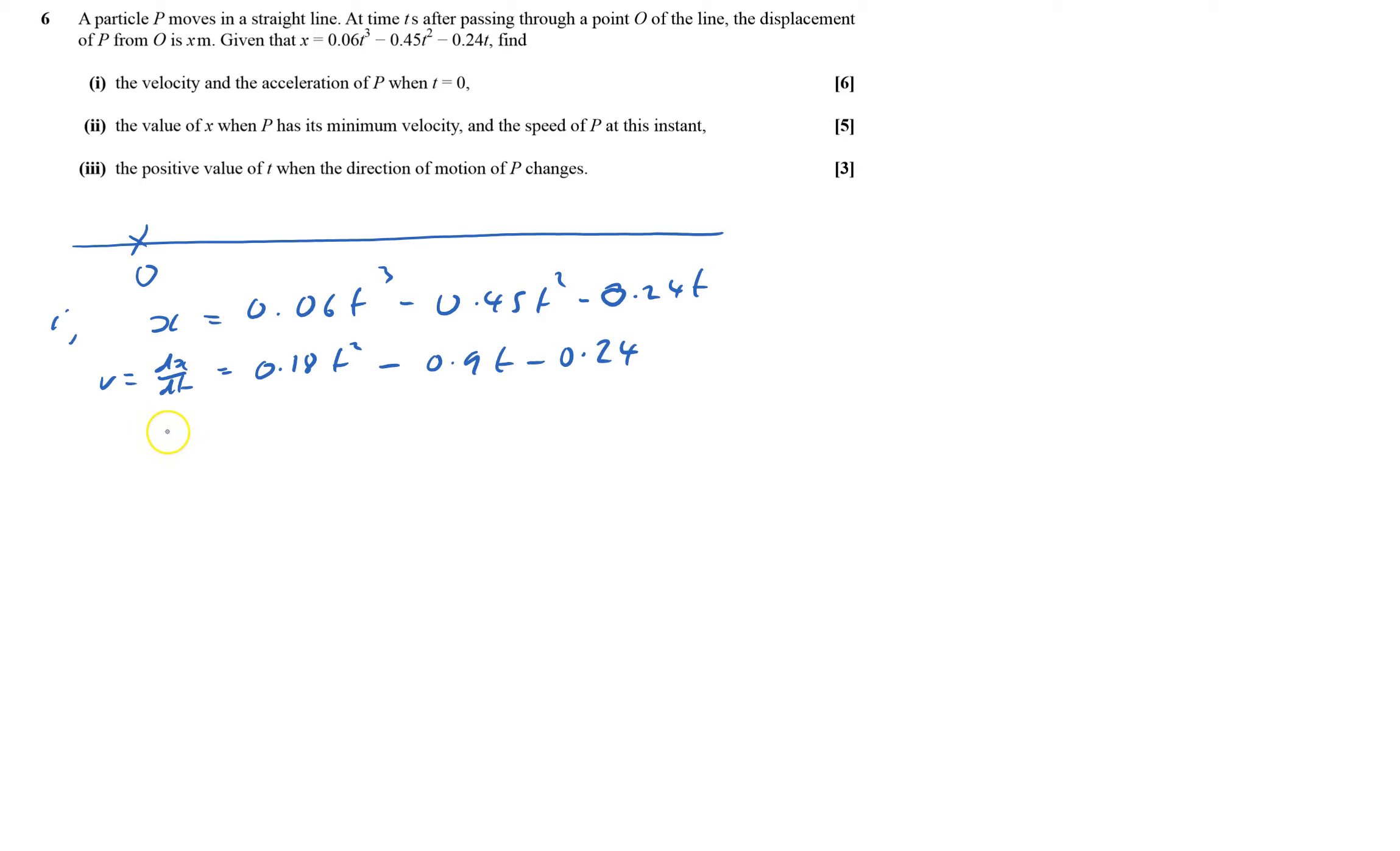And when t equals 0, velocity equals minus 0.24 meters per second.